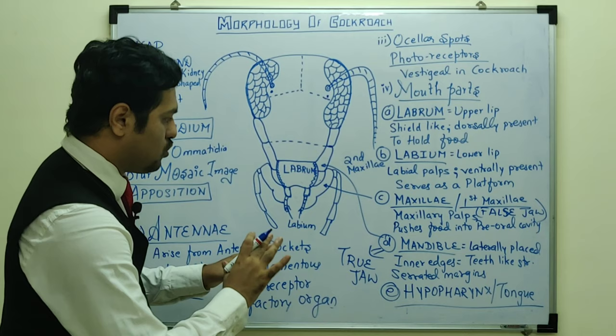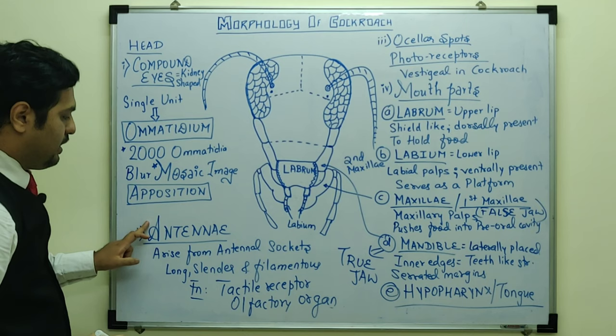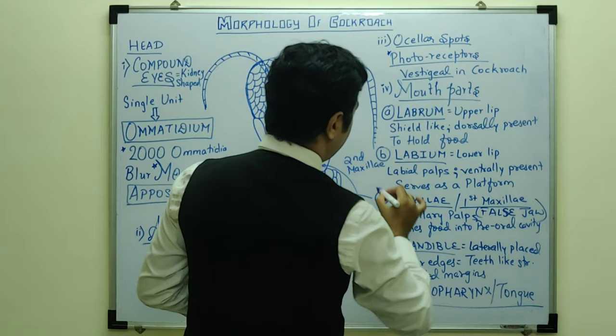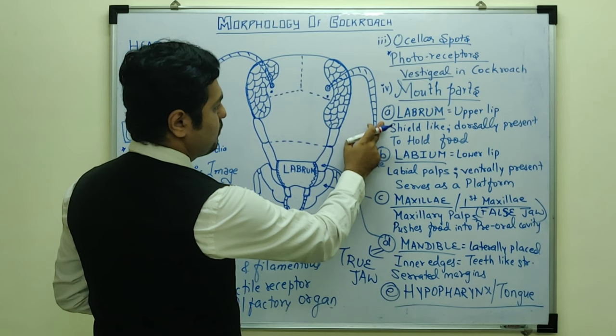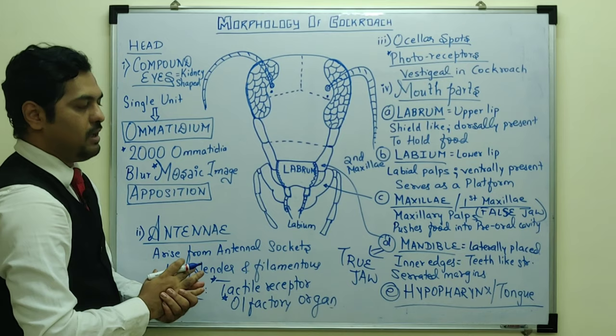Summary of head structures: compound eyes have the single unit called omatidium, with 2000 omatidia; they form an appositional or blur mosaic image. Antennae arise from antennal sockets, are long, slender, and filamentous; they act as tactile receptors and olfactory organs. Ocular spots act as photoreceptors but are mainly vestigial. Mouth parts: labrum is upper lip, labium is lower lip, maxilla is accessory jaw, mandible is true jaw, and hypopharynx is the tongue.